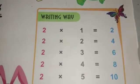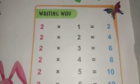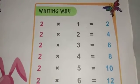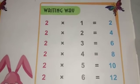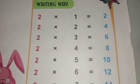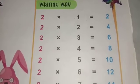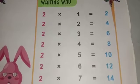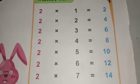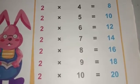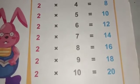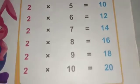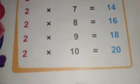2 1s are 2, 2 2s are 4, 2 3s are 6, 2 4s are 8, 2 5s are 10, 2 6s are 12, 2 7s are 14, 2 8s are 16, 2 9s are 18, 2 10s are 20.